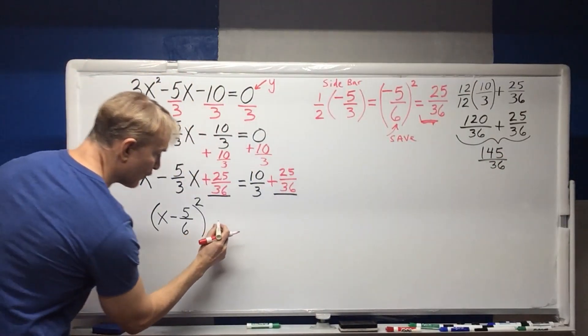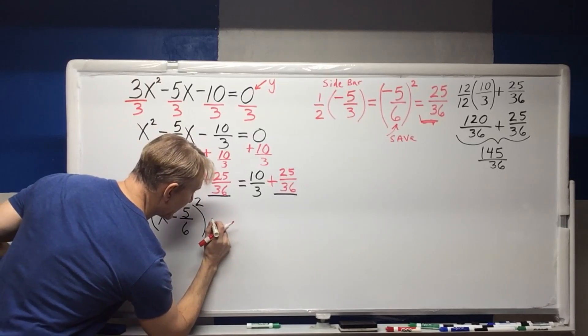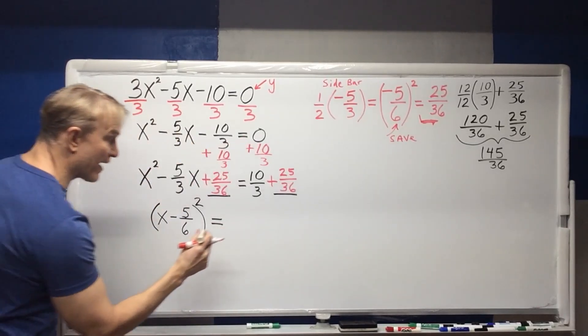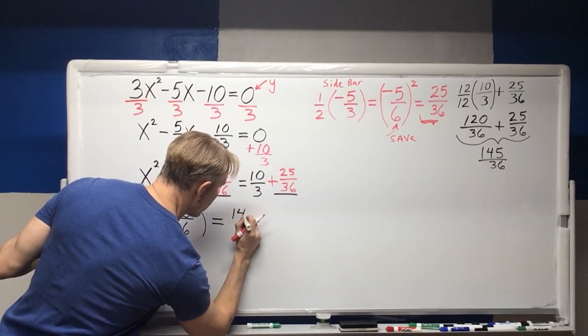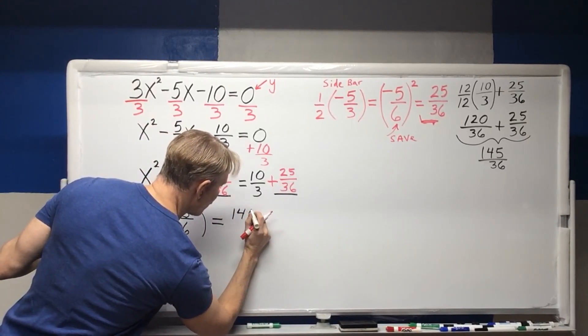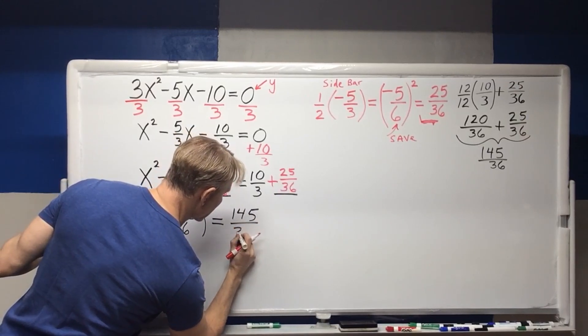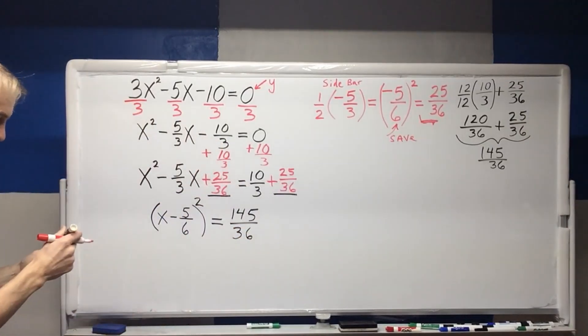So over here, after we do the mathematics on the right hand side, we're going to get one forty five over thirty six.